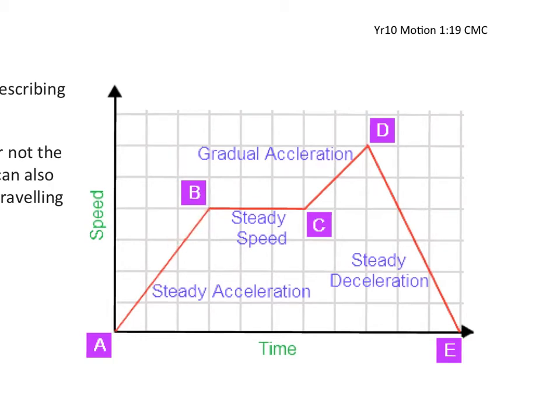Once we get to b, we are now travelling at the same speed because it doesn't change. This value remains the same, so this is the same steady speed, b to c.